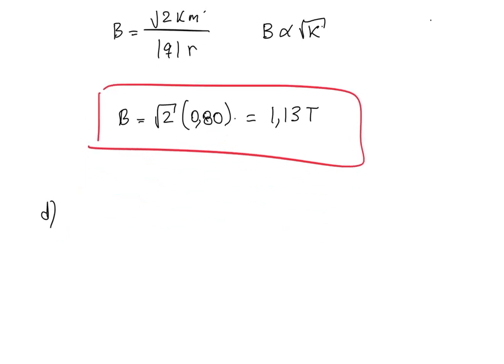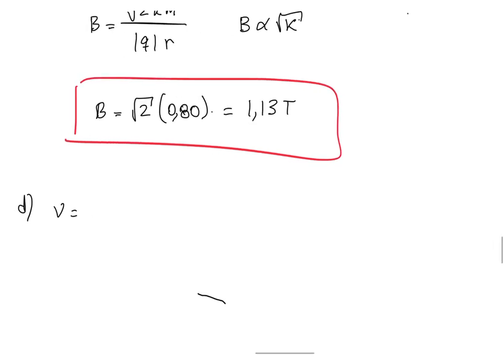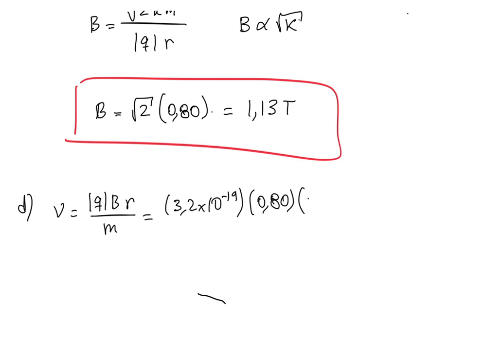For part D, the question is: for a magnetic field of 0.80 Tesla, what is the maximum energy to which an alpha particle — with given charge and mass — can be accelerated? We use the same expression for speed: v = qBr/m. Substituting values: charge is 3.2×10⁻¹⁹ C, magnetic field is 0.80 T, radius is 0.45 m, and mass is 6.65×10⁻²⁷ kg.